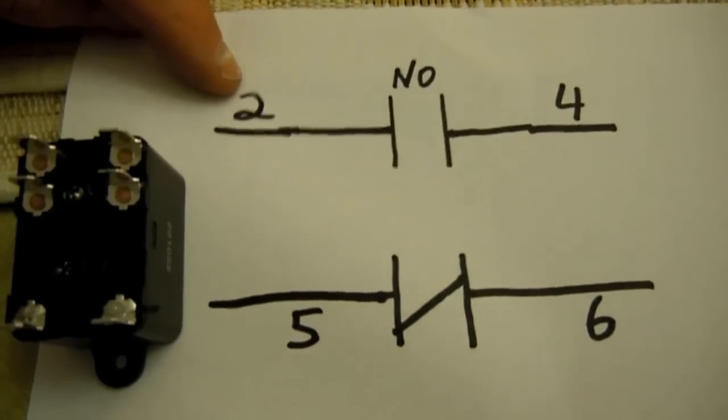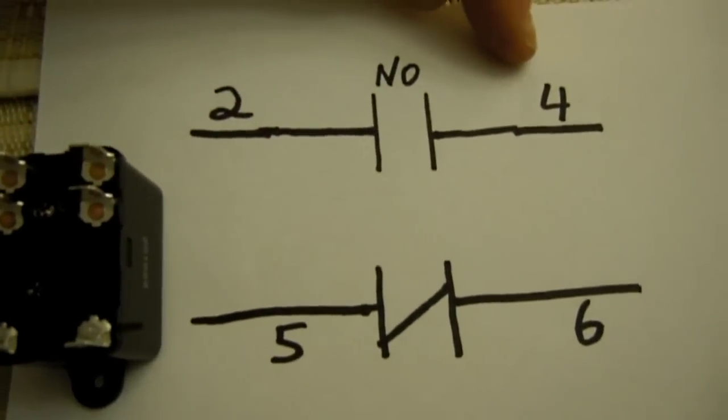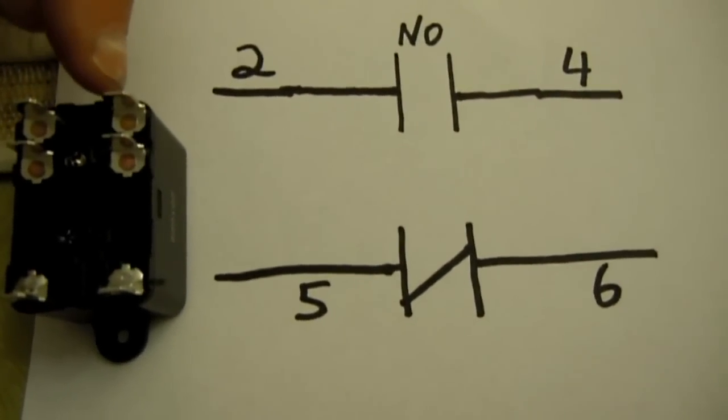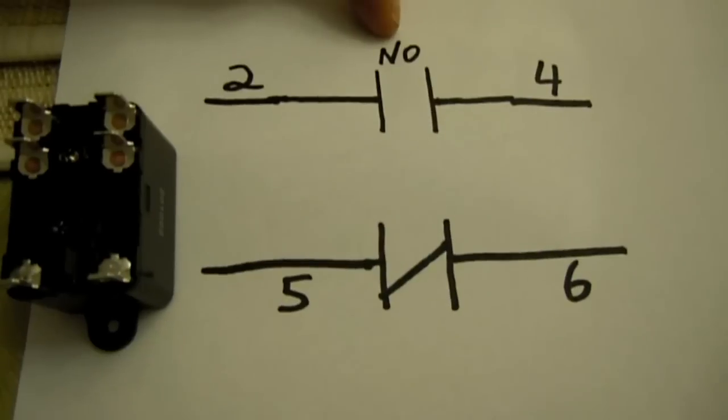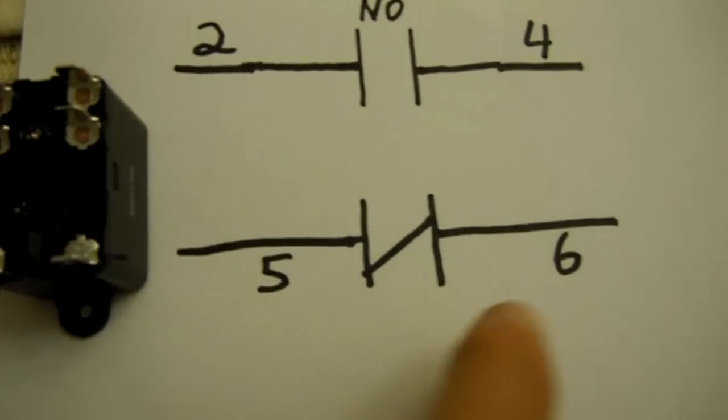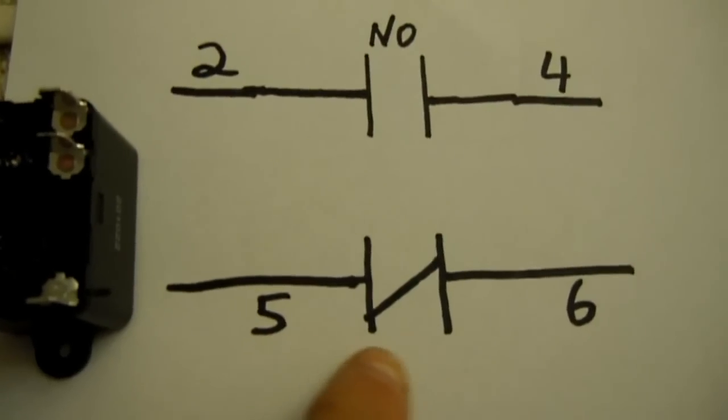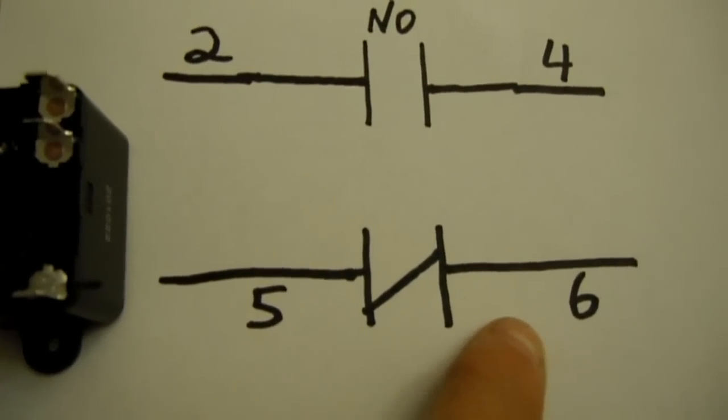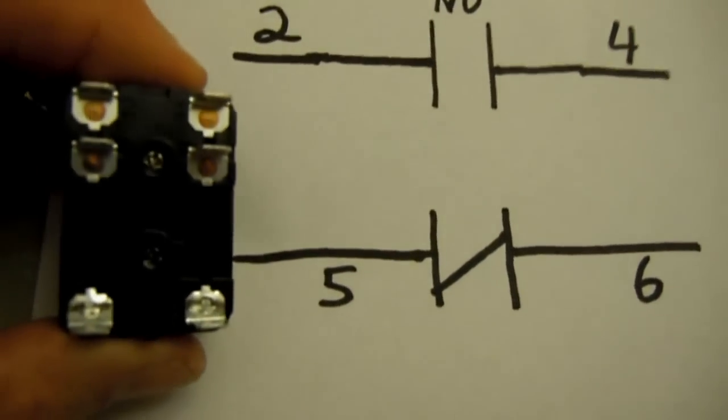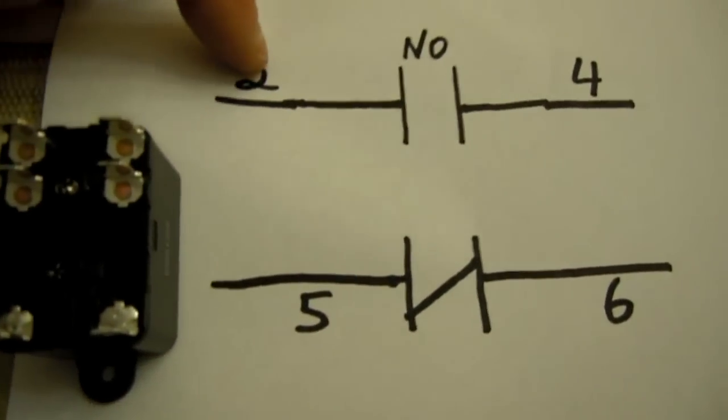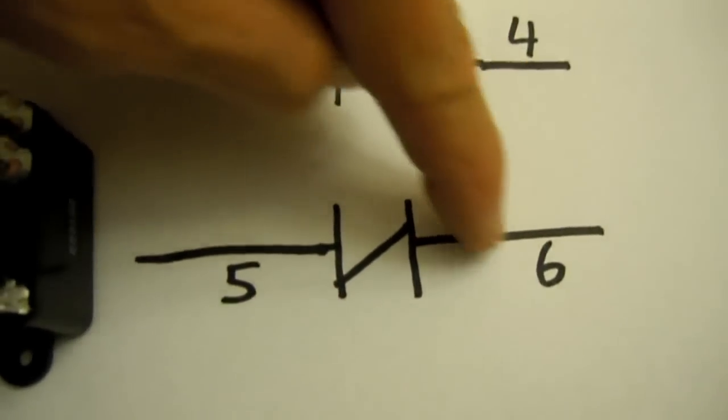Position two, like right here, and position four, which is this pin, is the normally open side of this relay. Positions five and six, right here and here, is where you would connect your normally closed position. So that means when this relay energizes, positions two and four close, and positions five and six open.